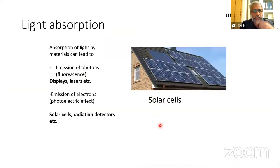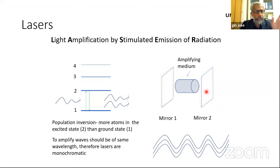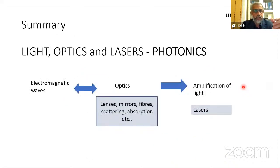Devices that work on absorption of light include solar cells. Another concept is the laser — Light Amplification by Stimulated Emission of Radiation — which involves producing and amplifying light using an amplifying medium. Mirrors are used to select a particular wavelength within the amplification range, producing light of a single or very narrow wavelength at high intensity.